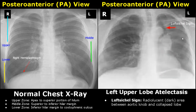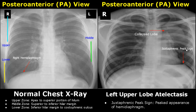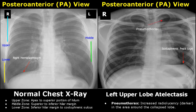Here is a different patient with left upper lobe atelectasis showing the Luftsickel sign. The juxtaphrenic peak sign is another feature in left upper lobe atelectasis, in which the hemidiaphragm will have a peaked appearance with a sharp point. Lobar collapse may be accompanied by pneumothorax, which refers to the presence of air in the pleural cavity, causing increased radiolucency in the area around the collapsed lobe.